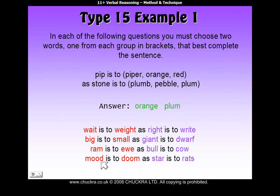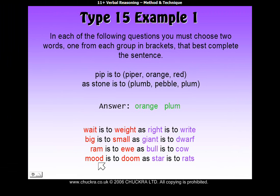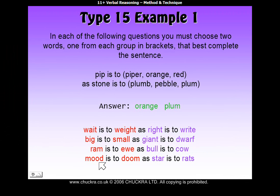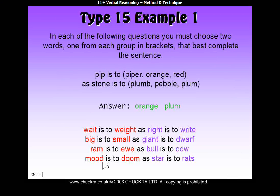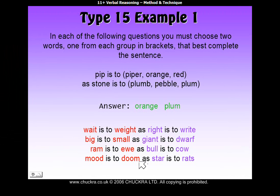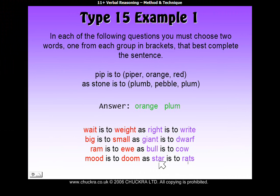Another relationship type uses anagrams — words where you rearrange the letters to make another word. This example is a special kind of anagram where you read the word backwards to get the other word. If you read 'mood' backwards, you get D-O-O-M, which is 'doom.' And 'star' read backwards gives you 'rats.' The link between these word pairs is that they are anagrams of each other. That's how you do Type 15.